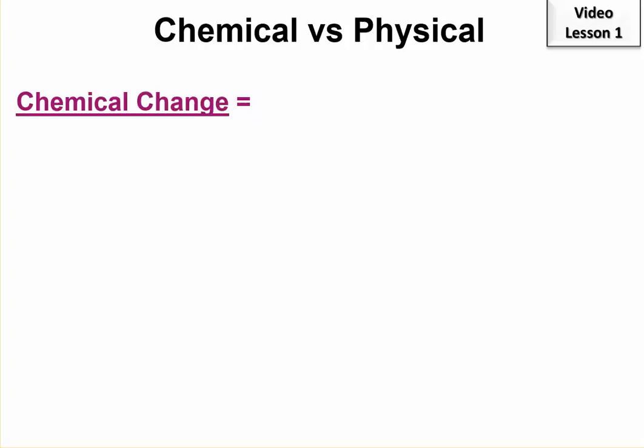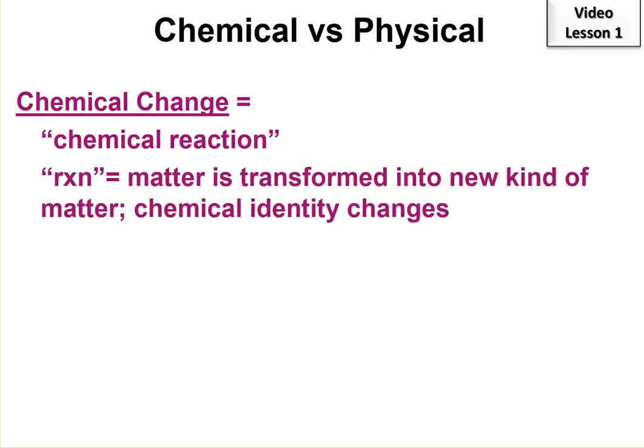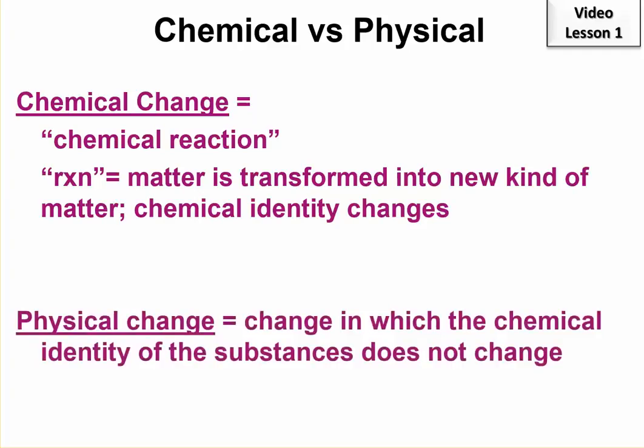Let's talk about the difference between chemical and physical changes. Chemical changes involve the change in the substance identity. Remember we call these also chemical reactions. Physical changes the substance keeps its identity. Let's list some of each of these.